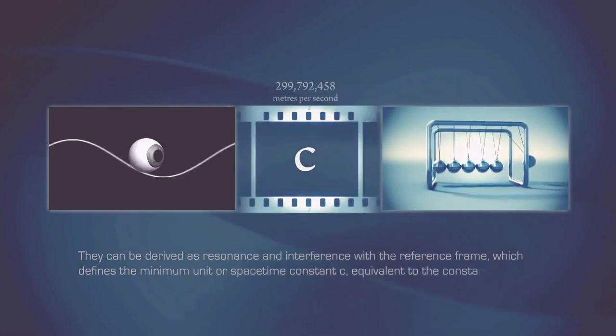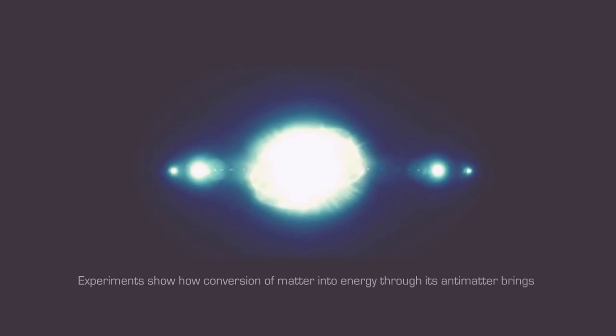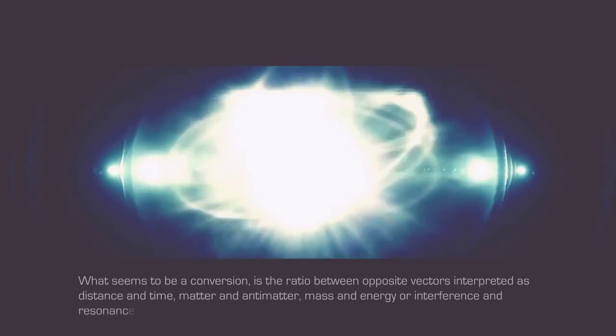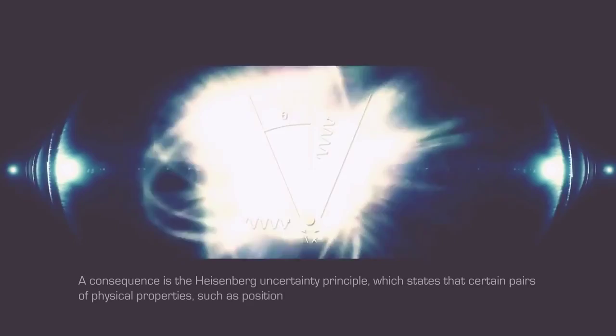Experiments show how conversion of matter into energy through its antimatter brings about gamma rays with exact opposite momentum. What seems to be a conversion is the ratio between opposite vectors interpreted as distance and time, matter and antimatter, mass and energy or interference and resonance within the abstract arrow of time of C. The sum of opposite vectors is always zero. This is the reason for the symmetry or conservation laws in physics, or why at the speed of C, time and space are zero due to length contraction and time dilation. A consequence is the Heisenberg uncertainty principle, which states that certain pairs of physical properties, such as position and momentum, cannot be known simultaneously to high precision. In a sense, a single particle is its own field.